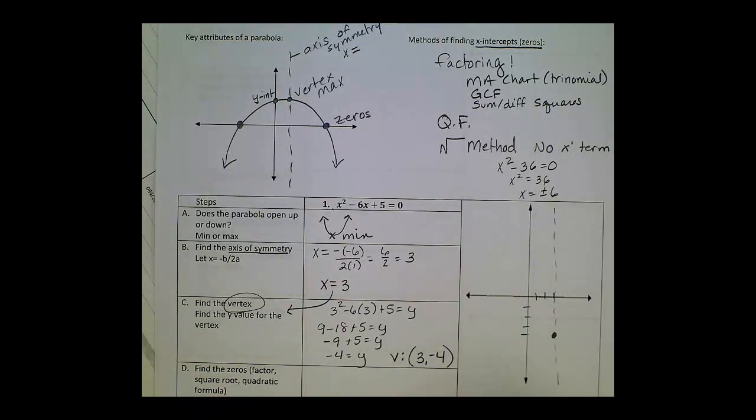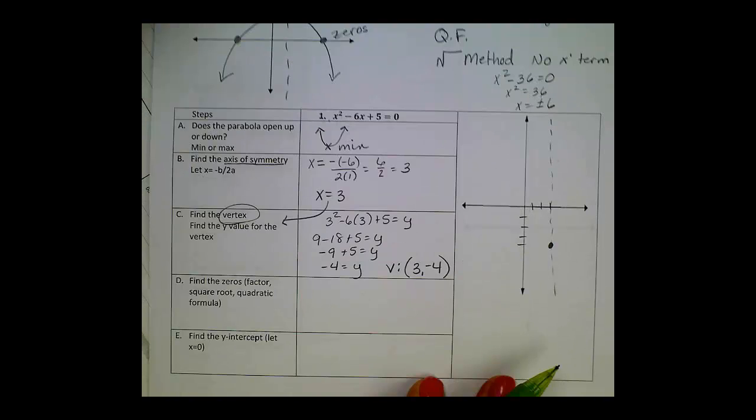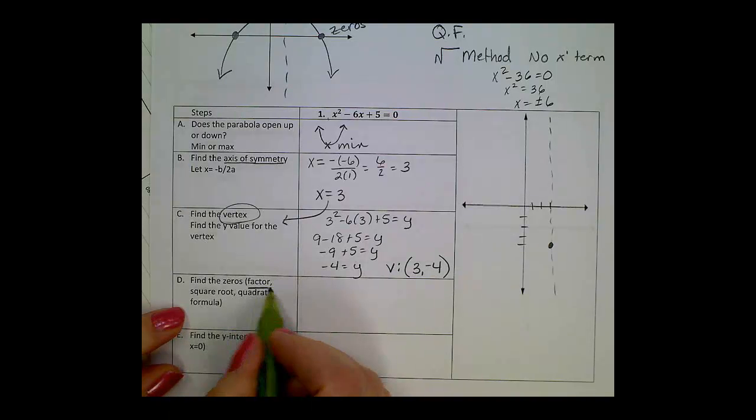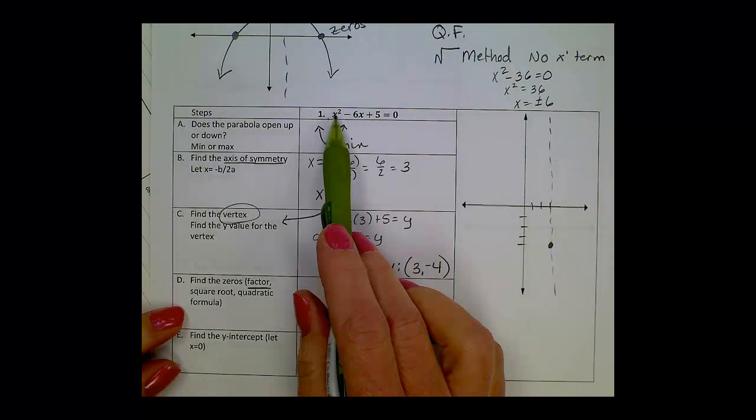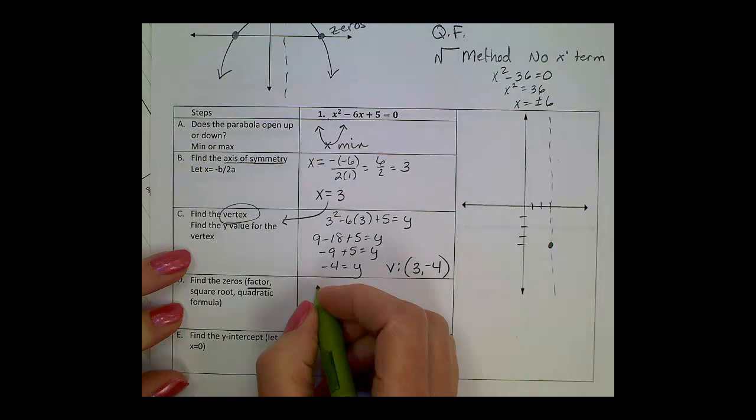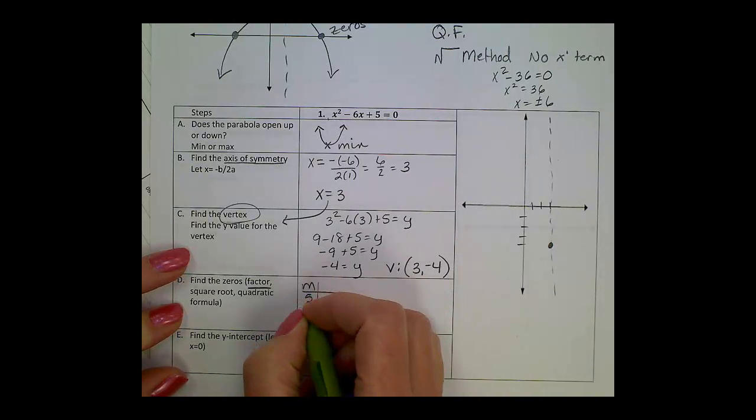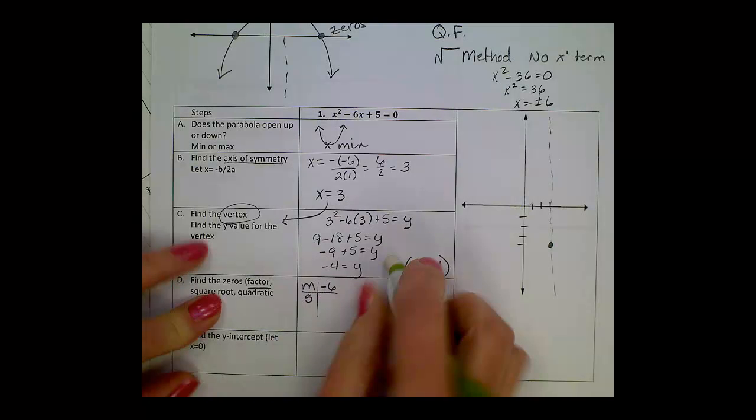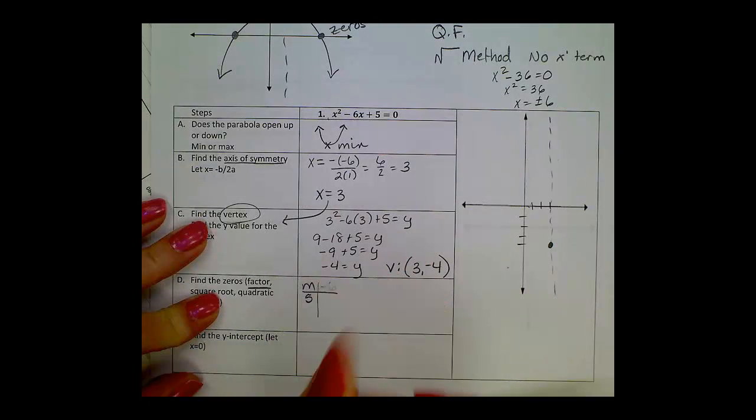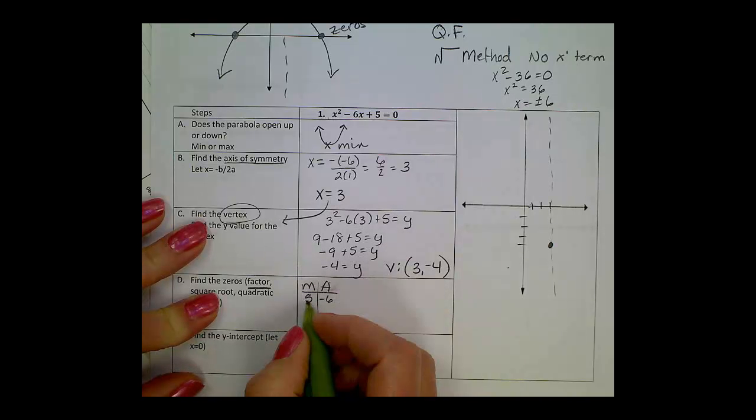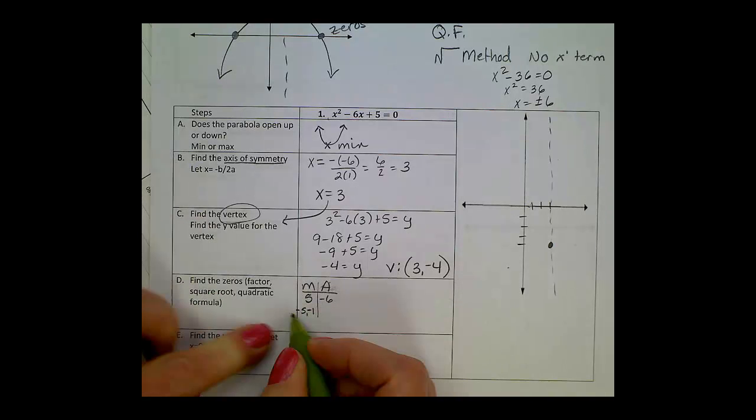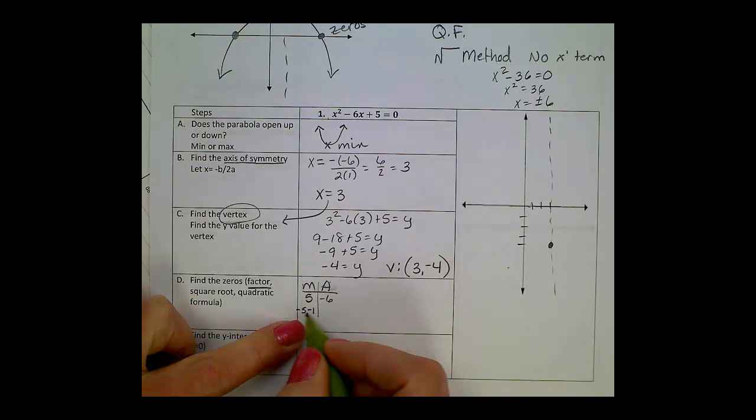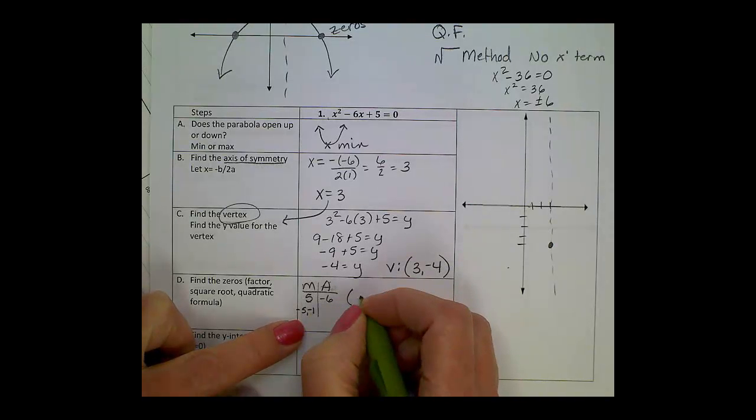Now, yesterday, we jumped right to the y-intercept. Today, we're going to look for zeros first. And how we're going to look for zeros, let's check factoring first and see if factoring would work. It's a trinomial. If I were to set up the Machart, I'm looking for what multiplies to 5 and adds to negative 6. The only factors I could think of are 5 and 1. If I made them both negative, that would work. Add them, you get a negative value. Multiply them, you get a positive value.